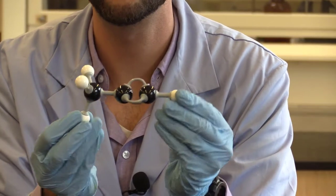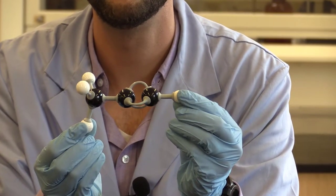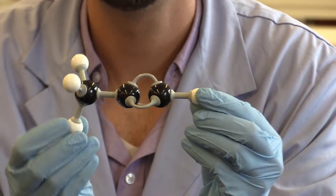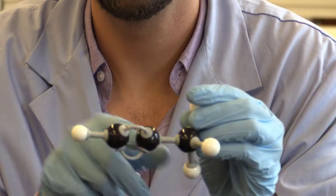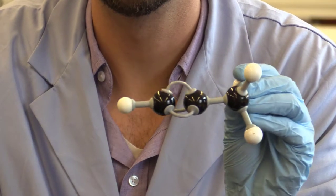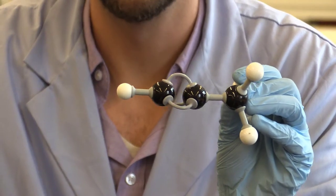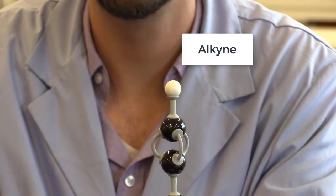Alright, on to our second structure. If you've noticed the triple bond there, this is our alkyne. So there is the one functional group in this structure.